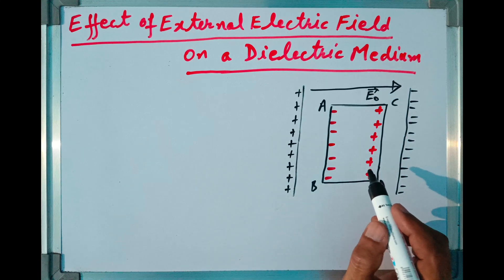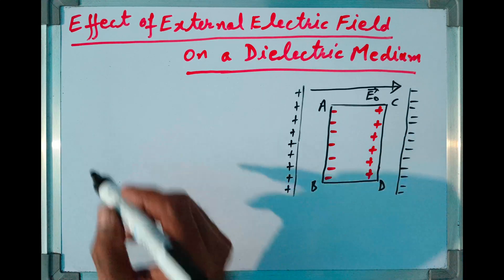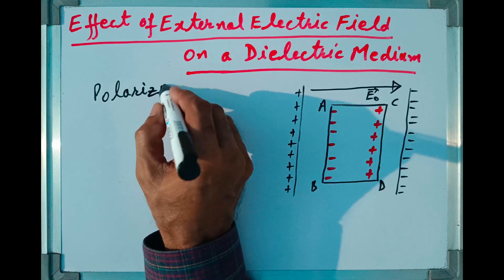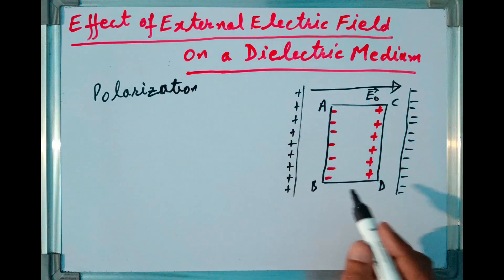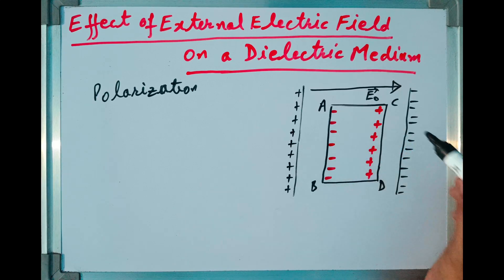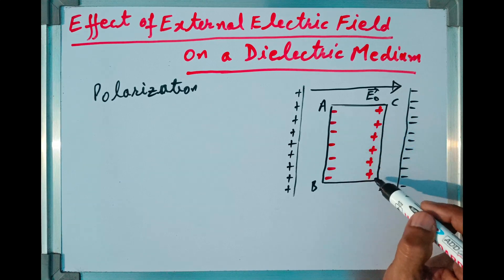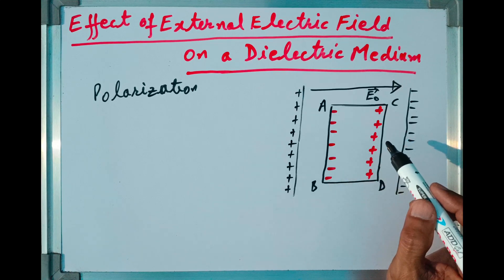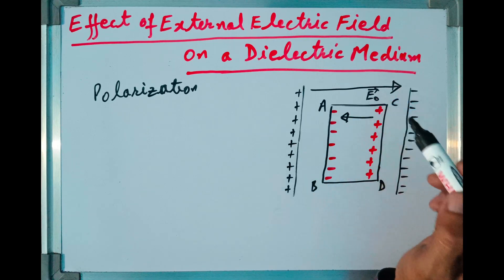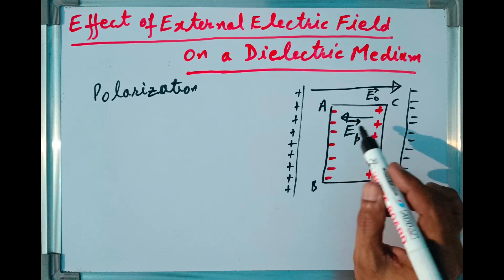So this process of creation of positive charges and negative charges on the two surfaces of the dielectric slab is called polarization of the slab — the slab gets polarized. These positive and negative charges are equal in magnitude, but their magnitude is very much less than the magnitude of the plates which produce the external electric field E₀. Now this positive surface CD and negative surface AB will create another electric field inside the slab, and the direction of this electric field will be opposite to the external electric field. This electric field is named as Ep vector — that is, the electric field due to polarization of the dielectric slab.